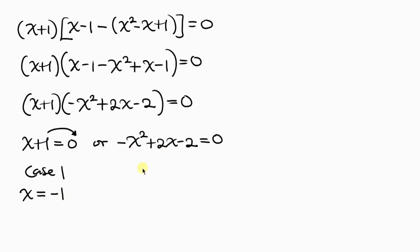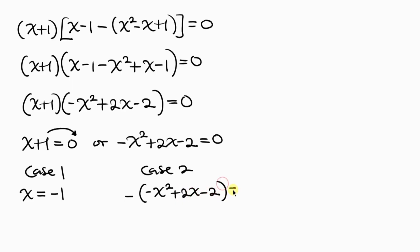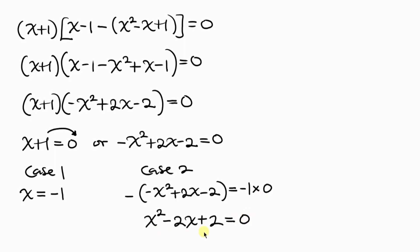For Case 2, we have to get rid of the negative to make it positive. We do that by multiplying through by negative 1: negative 1 times (negative x squared plus 2x minus 2) equals 0. Negative times negative gives positive x squared, negative times positive gives negative 2x, and negative times negative gives positive 2. So we have the quadratic equation x squared minus 2x plus 2 equals 0.